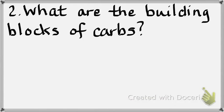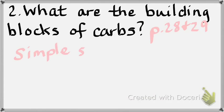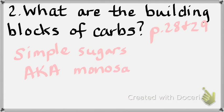What are the building blocks of carbohydrates? Good reference pages are 28 and 29. Some people call them simple sugars — the technical term is monosaccharide. A monosaccharide and a simple sugar are one and the same: the smallest little units of carbohydrates.